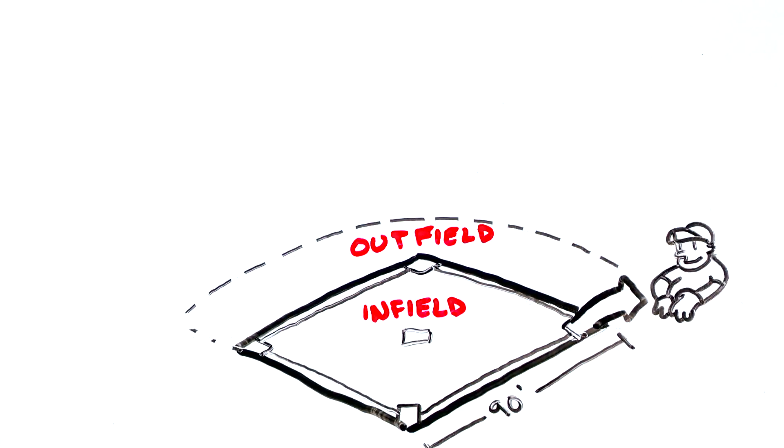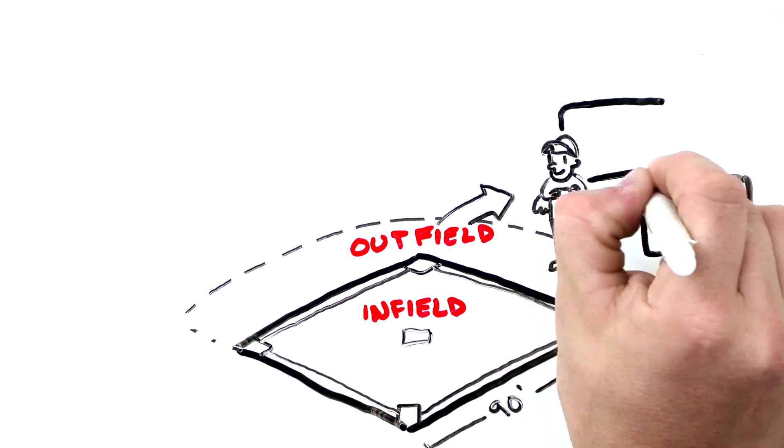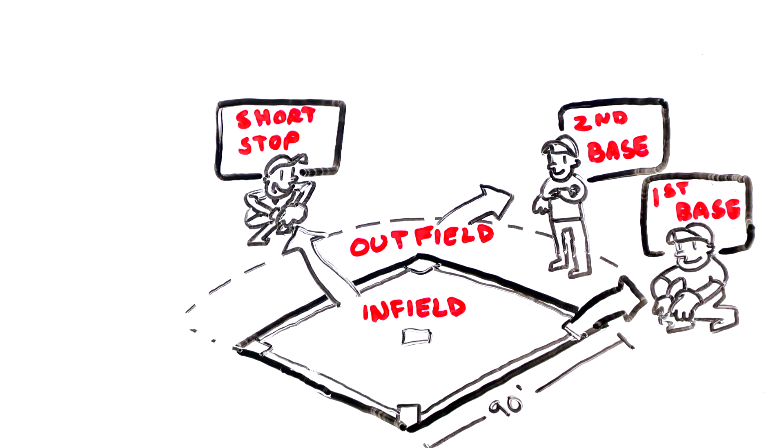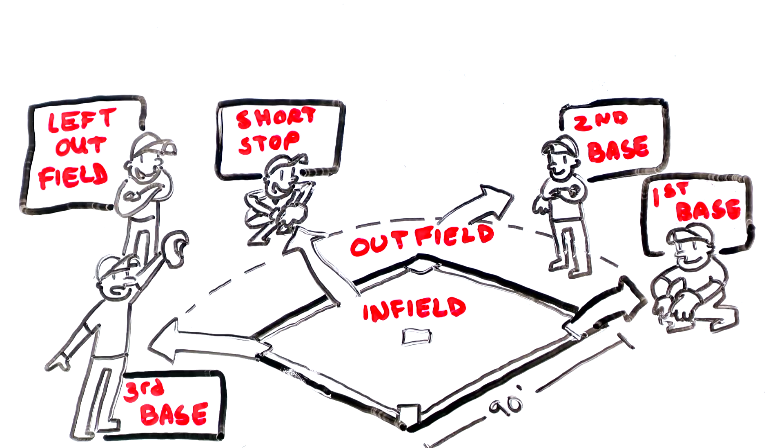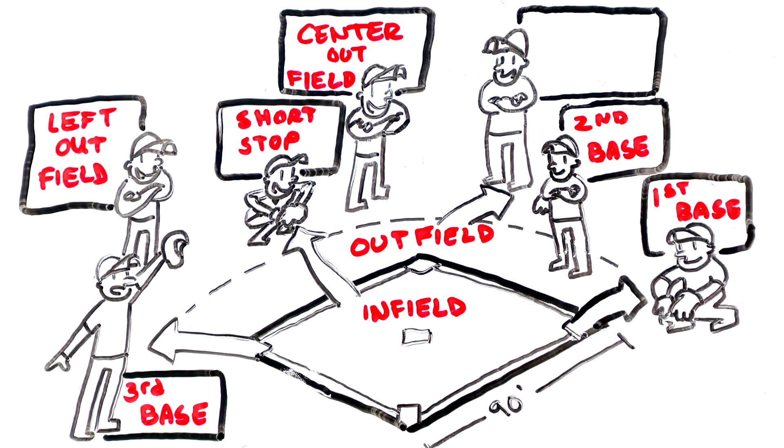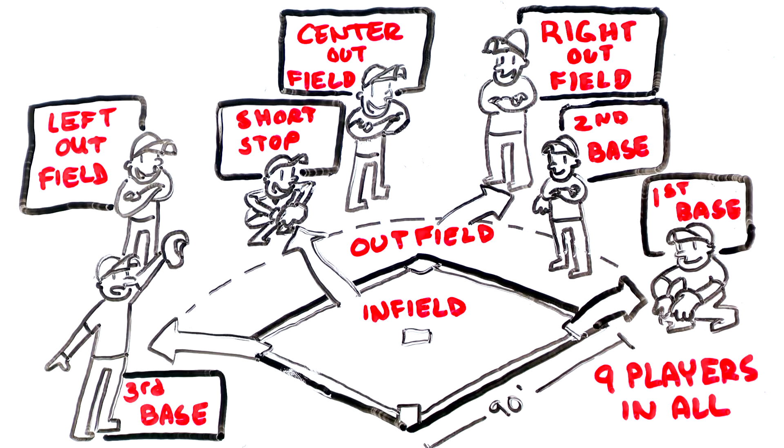The defense has infielders, who are the first baseman, second baseman, shortstop and the third baseman, as well as the outfielders: the left fielder, center fielder and right fielder. Nine players on the field in all.